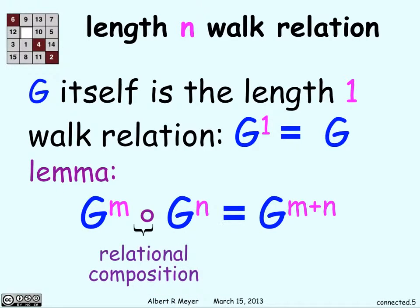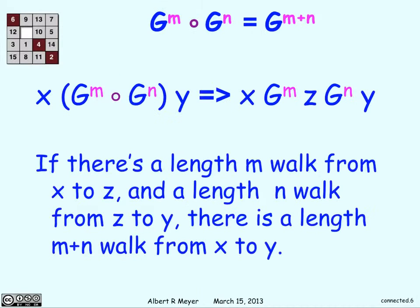Now, this lemma says that G^m in relational composition with G^n equals G^(m+n). Let's explain what this means. So that relational composition means the relational composition between the two applies from x to y if there is some vertex z such that there is a path m from x to z and then a path n from z to y. There's some G^m applies from x to z and G^n applies from z to y.